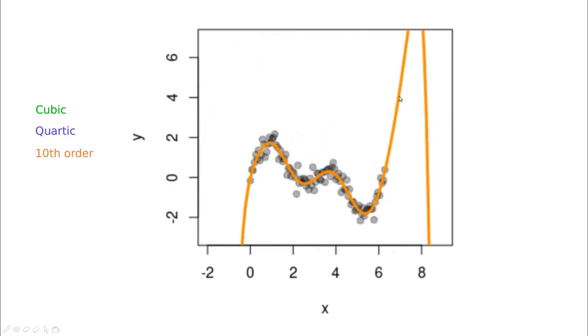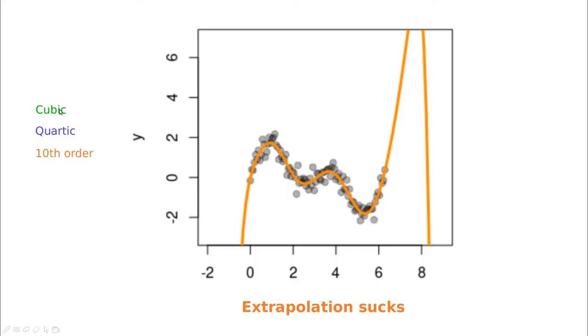But again, we face this problem that what is going to happen when we try to extrapolate. Low order polynomials are good because they are simple, but sometimes they are not able to capture the complexity of the data. High order polynomials can capture this variability but such extrapolating.